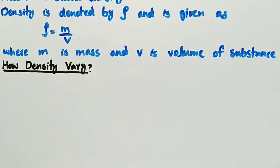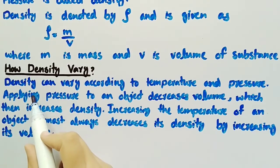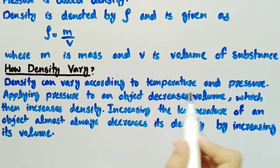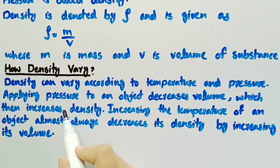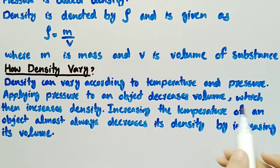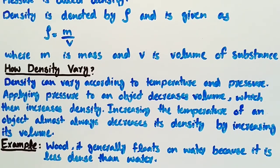Let's see how density varies. Density can vary according to temperature and pressure. Applying pressure to an object decreases volume, which then increases density. Increasing the temperature of an object almost always decreases its density by increasing its volume.